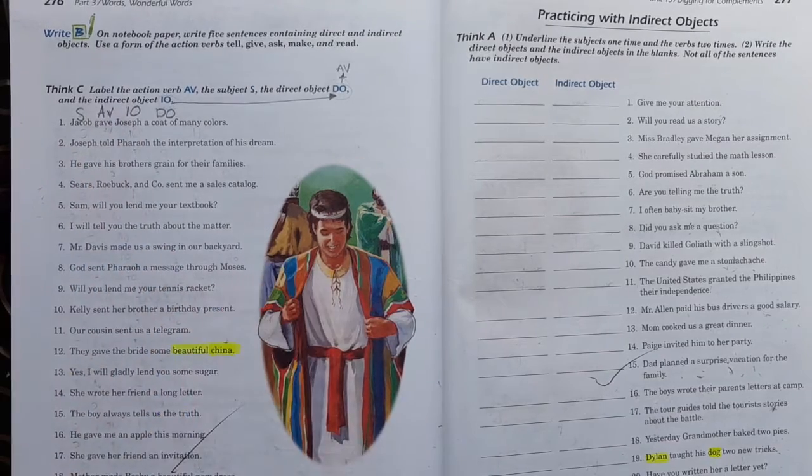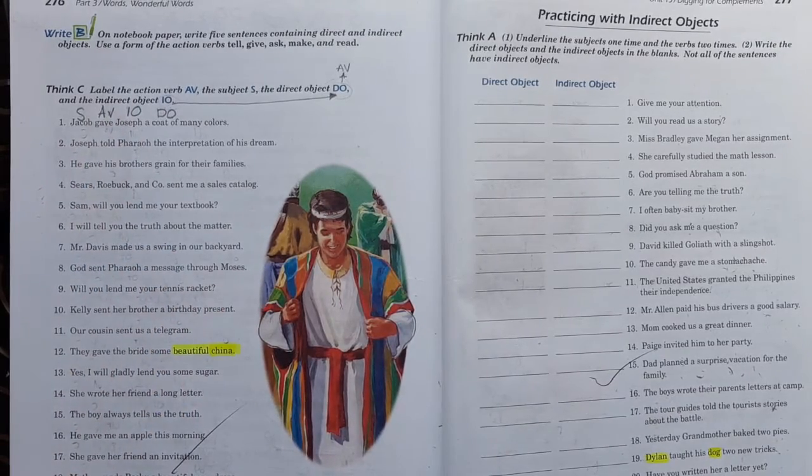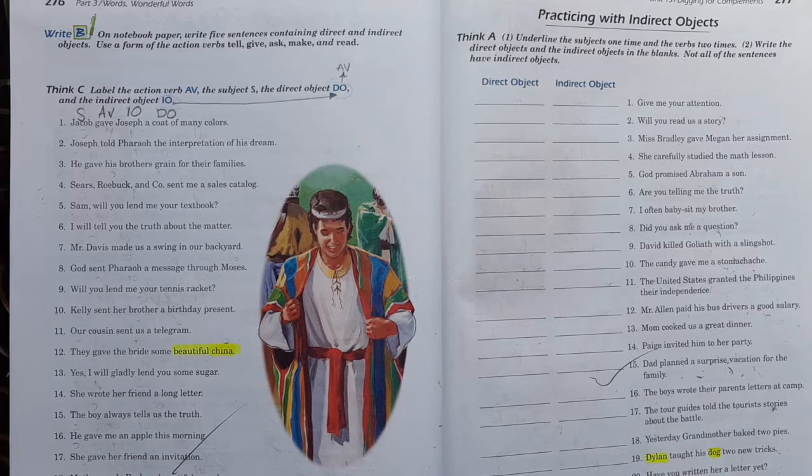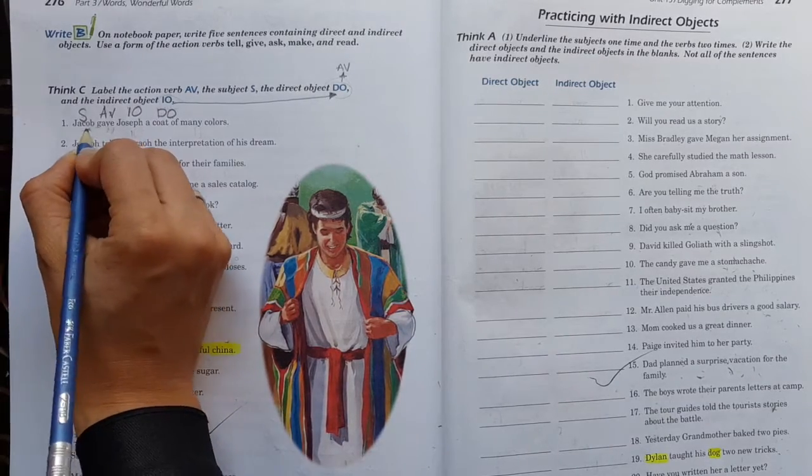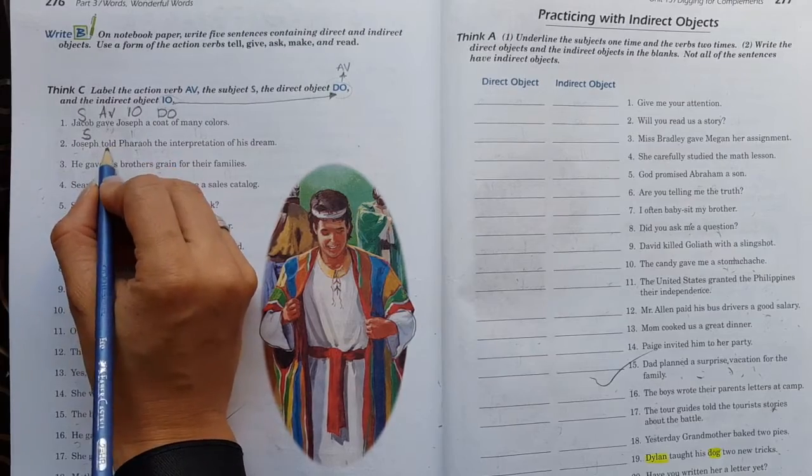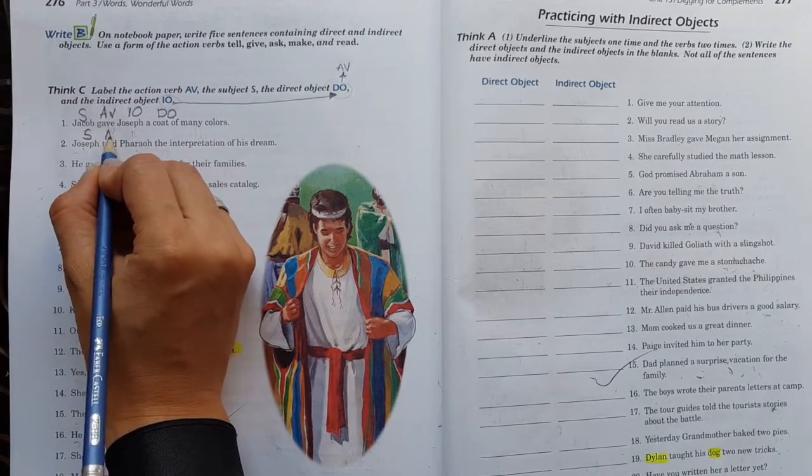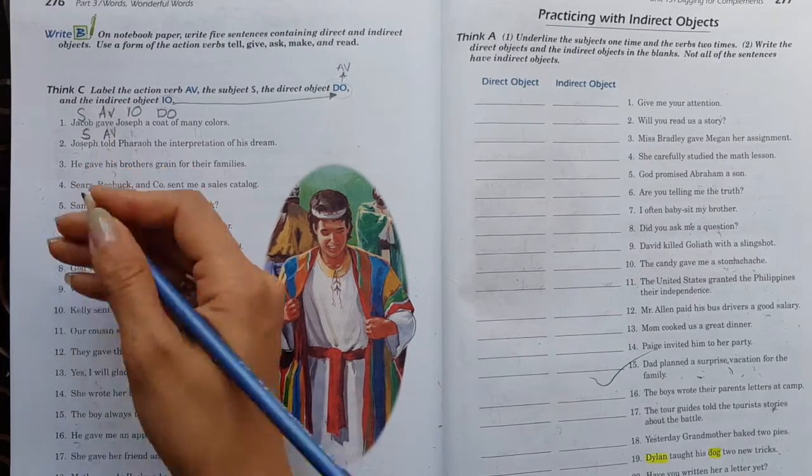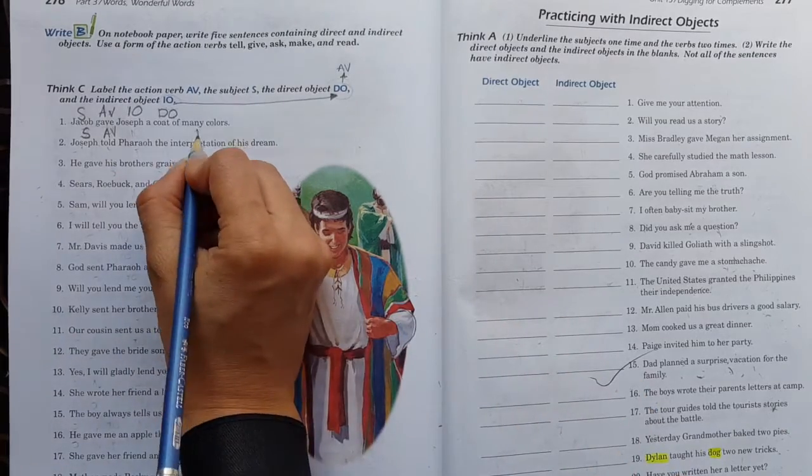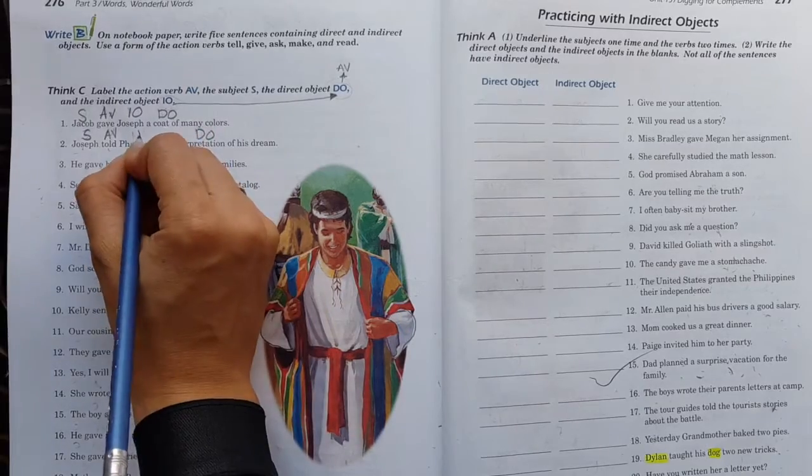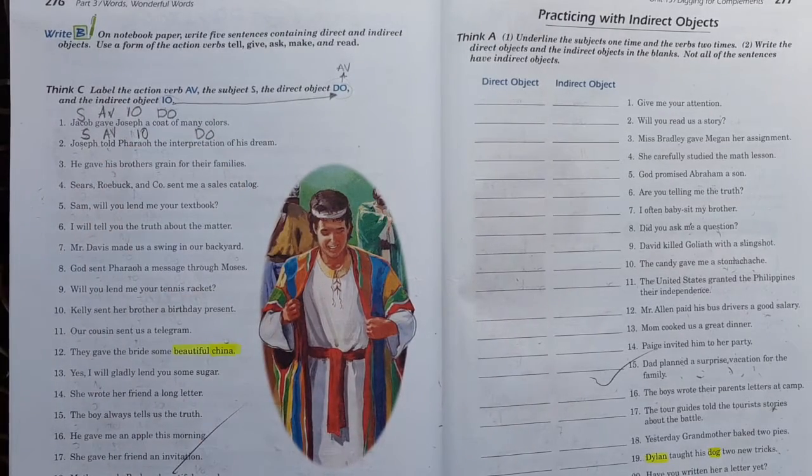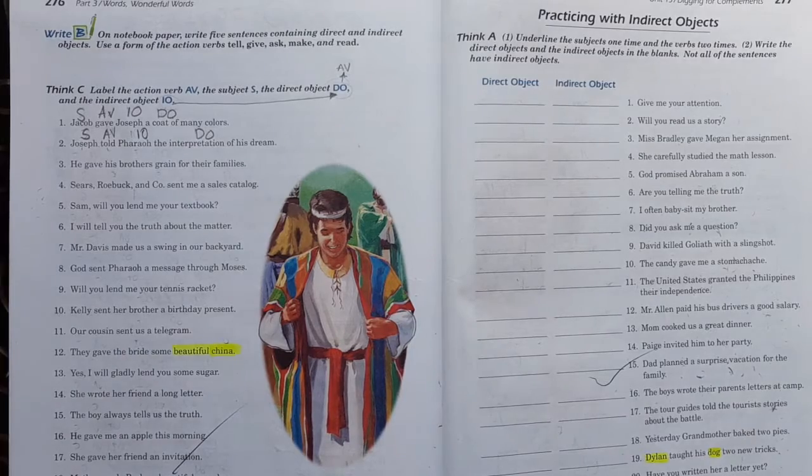Entonces, sujeto, action verb. El verbo recuerda que se refiere al objeto directo. Y el objeto directo se refiere al objeto indirecto. Vamos con el dos. Joseph told Pharaoh the interpretation of his dream.